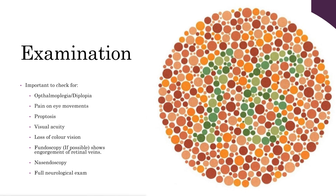You'll also want to check for any changes to colour vision, which can be done using Ishihara charts that can be brought up on your phone. If possible, you want to examine the eye itself — if you have an ophthalmoscope available, you can look at the back of the retina and look for any signs of engorgement of the retinal veins as a result of reduced drainage from the orbit. You'll also want to do a nasal endoscopy to look for any signs of nasal congestion, and finally perform a full neurological examination.